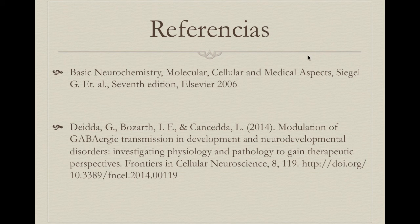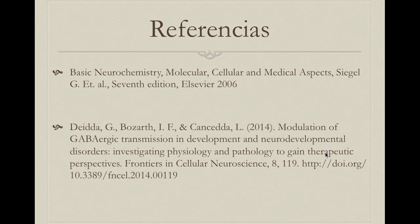Well, this is it. The references I used for this video are available if you want to check them out. One is a general overview of the GABA neurotransmitter, and the other very interesting article is about how GABA develops the brain and its implication in neurodevelopmental disorders. I hope you liked it. If you have any questions, don't forget to leave them in the comments. Don't forget to subscribe for all the other neurotransmitter videos. And as always, help us change the world — share the information.